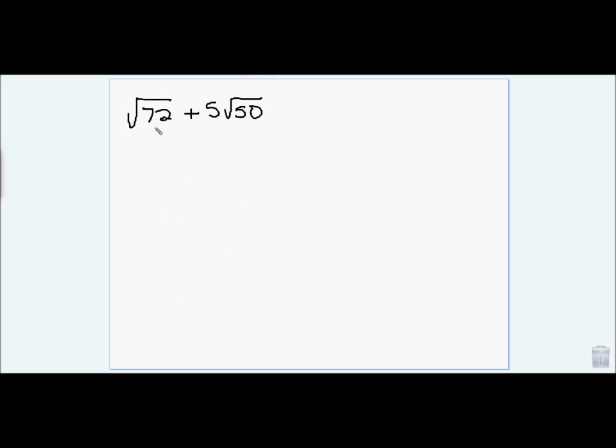I have 72 and 50. 72 is 2 times 36, and 36 is a perfect square, so I can pull out that 6. 50 is 2 times 25, and 25 is a perfect square, so I can pull out the 5.